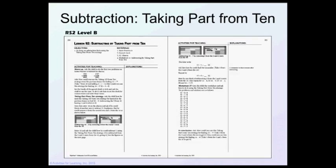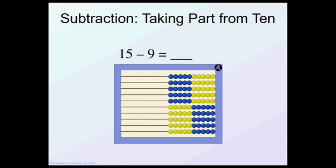Let's take part from the 10. Use the same numbers. 15 minus 9. So I have 15. This time, I'm going to take the 9 from the 5 on the second row and 4 more from the top row. And my answer is still 6.